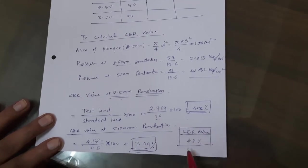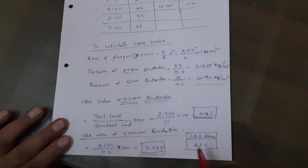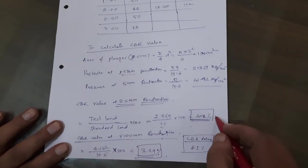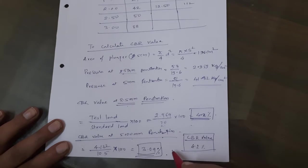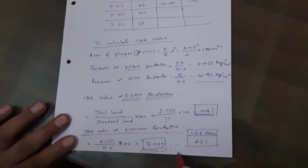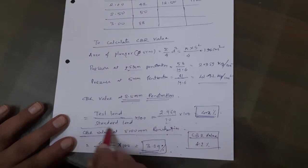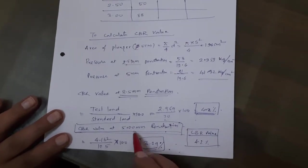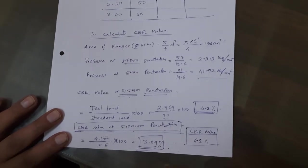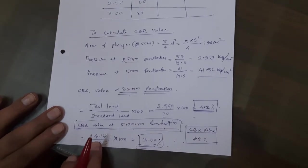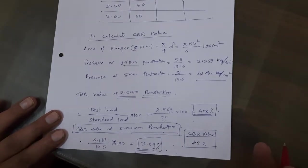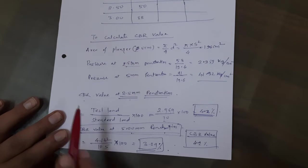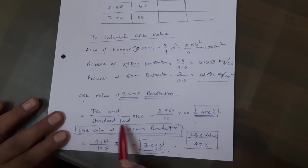However, it may happen that the CBR value at 5 mm penetration comes out more than the CBR at 2.5 mm. In that case, we repeat the same process on the same sample two times. If we again get a higher result at 5 mm penetration, then we take the CBR value at 5 mm as the final result. If after repeating, the CBR at 5 mm is less than at 2.5 mm, then we take the result at 2.5 mm penetration.